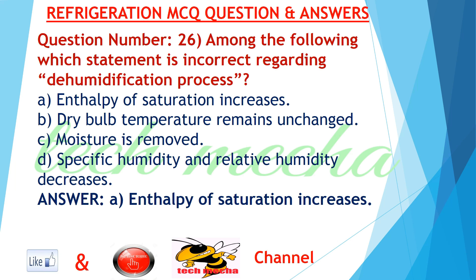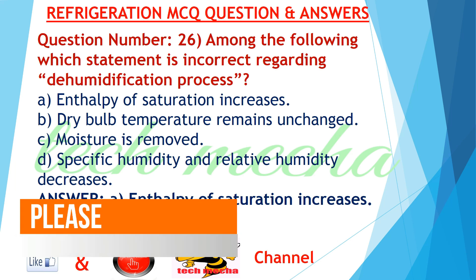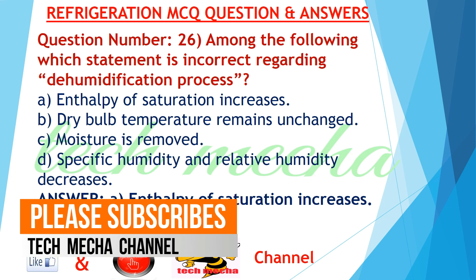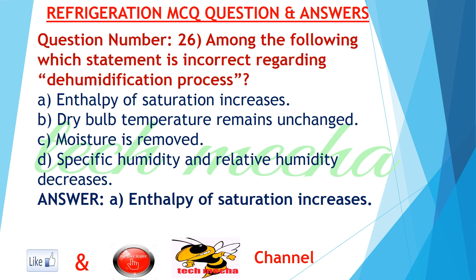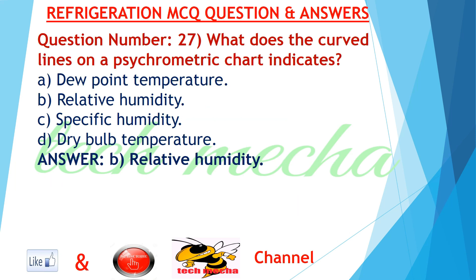Question number 26: Among the following, which statement is incorrect regarding the dehumidification process? A. enthalpy of saturation increases, B. dry bulb temperature remains unchanged, C. moisture is removed, D. specific humidity and relative humidity decreases. Answer: A. enthalpy of saturation increases.